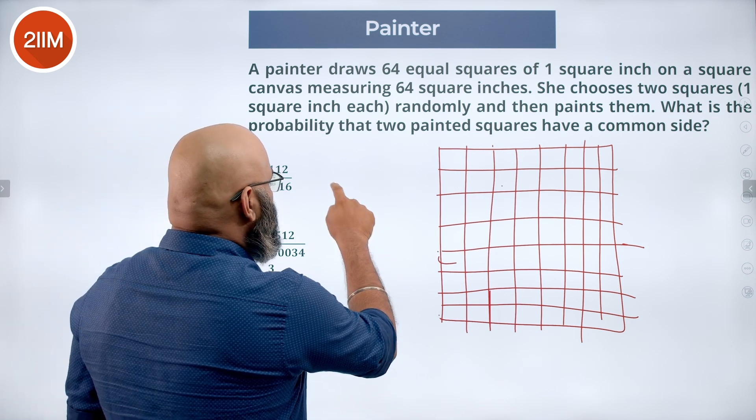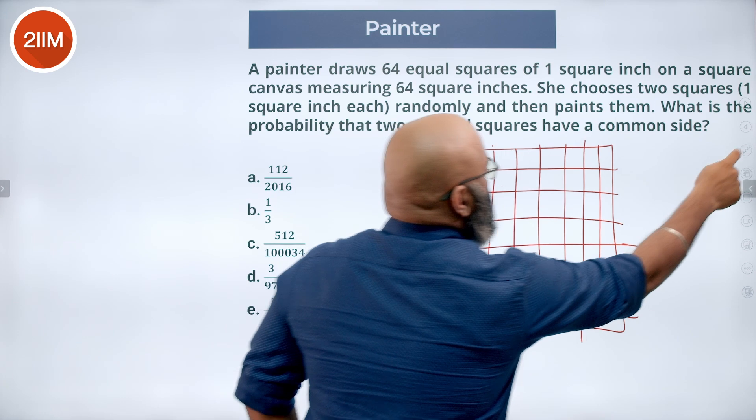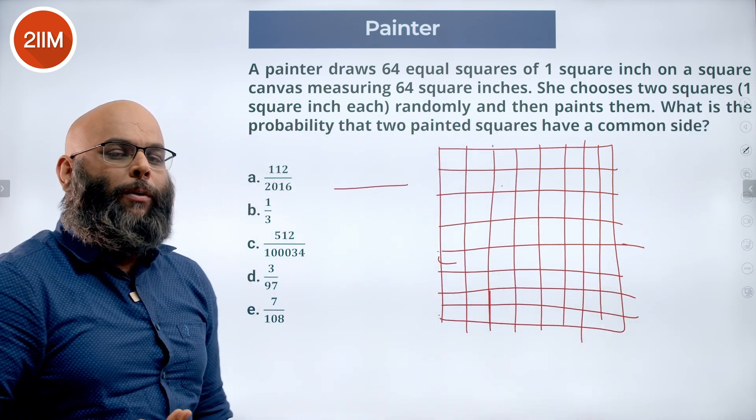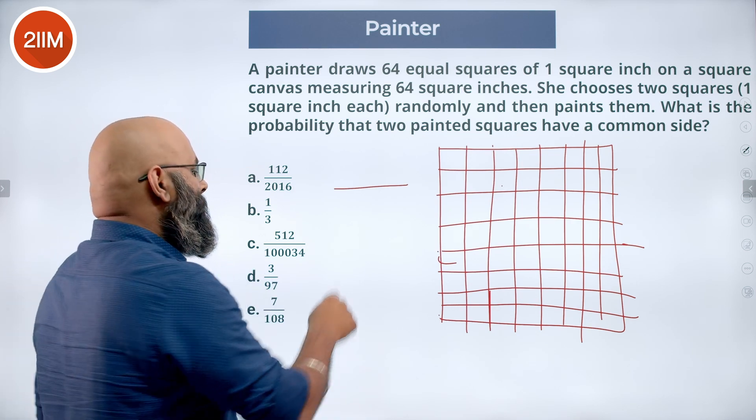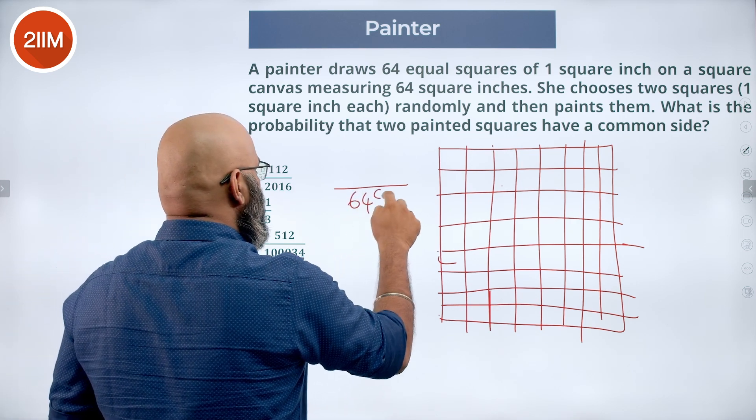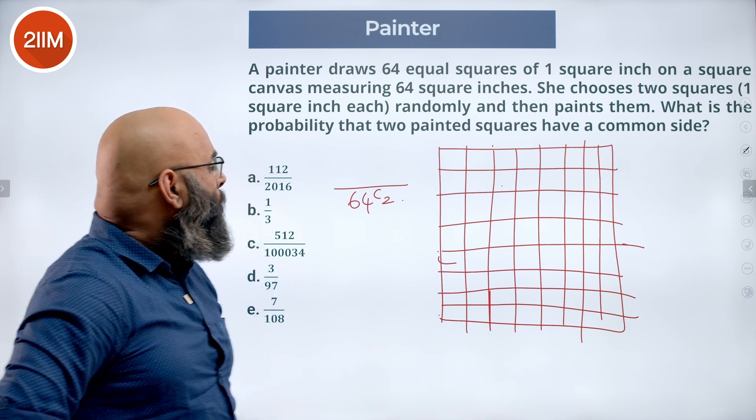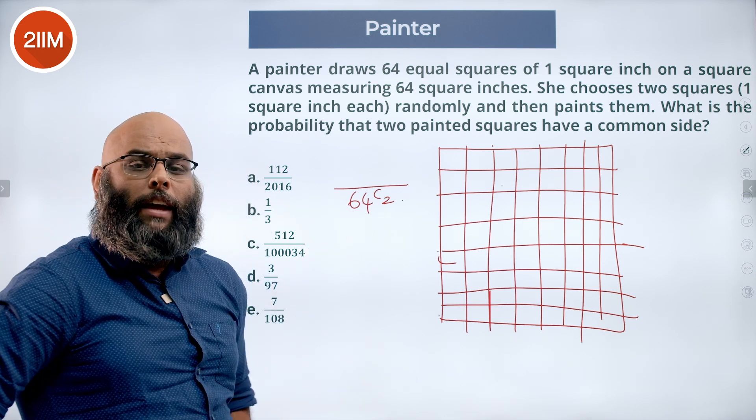So let's find the sample space first. It says out of 64 we can choose any 2, that is 64 C2. So that's going to be our sample space. Now what is the favourable event that we have here?